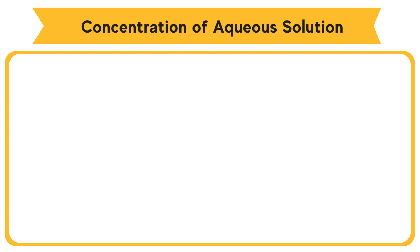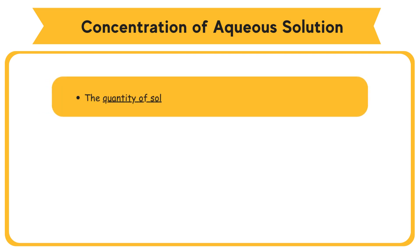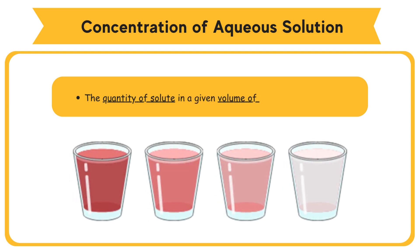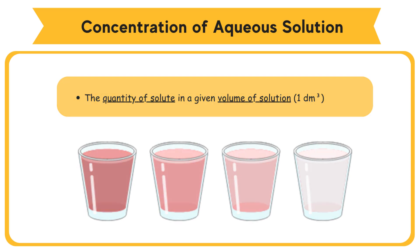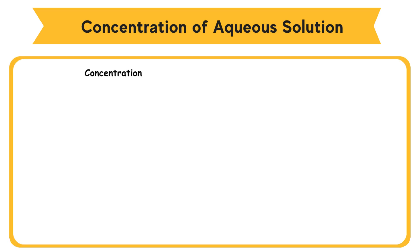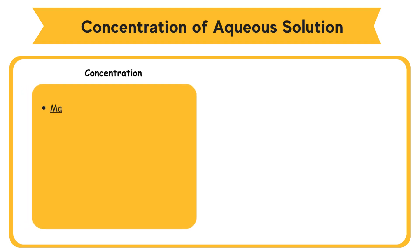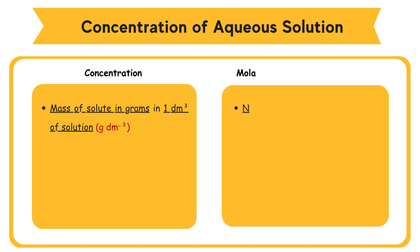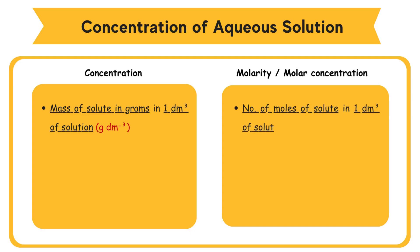Concentration of Solution. The concentration of a solution refers to the quantity of solute in a given volume of solution, which is usually 1 dm³ of solution. It can be expressed as mass of solute in grams per dm³, or as number of moles of solute per dm³ — this is called molarity, or molar concentration.